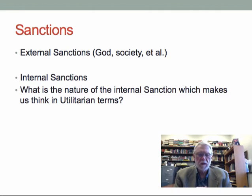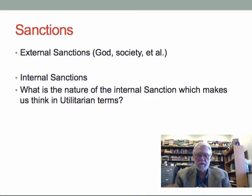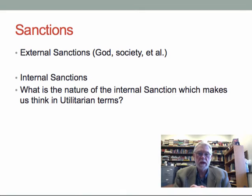Mill talks extensively about external sanctions, which are pretty obvious. The police give us tickets if we drive on the wrong side of the road — that's an external sanction. Society thinks badly of us if we don't act appropriately. We want our friends and society to think well of us. Similarly, with regard to God, we think God will reward or punish us for our actions — these are external sanctions as well.